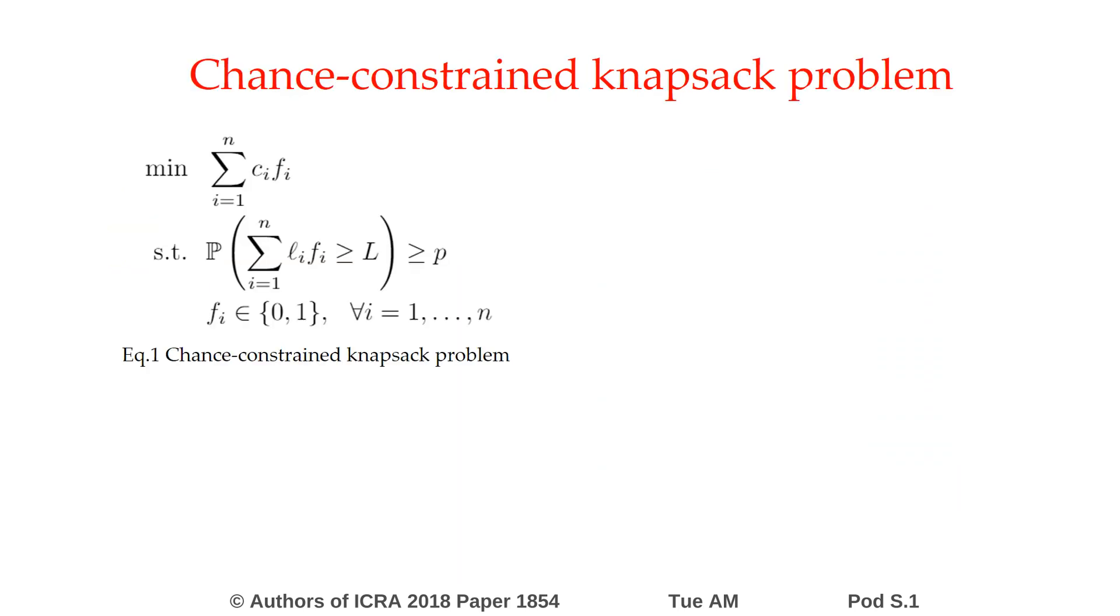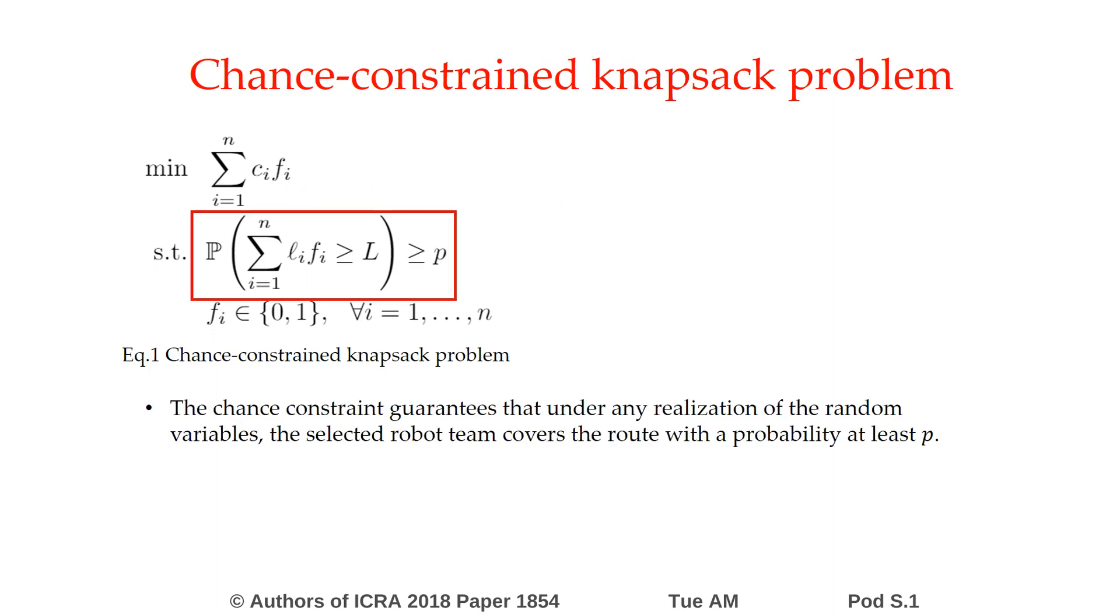We formulate the team selection problem as the chance-constrained knapsack problem. The chance constraint guarantees that under any realization of the random variables, the selected robot team covers the route with a probability of at least p. However, solving chance-constrained problems is challenging.